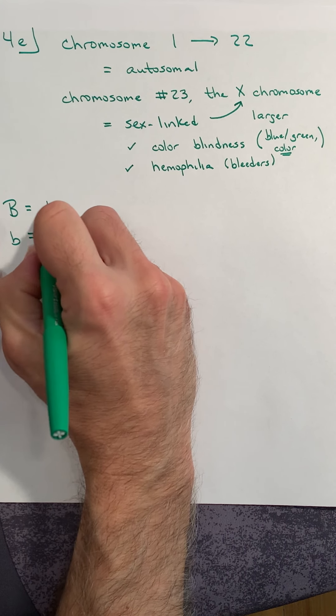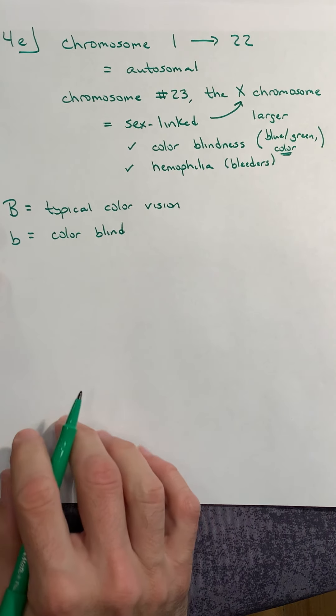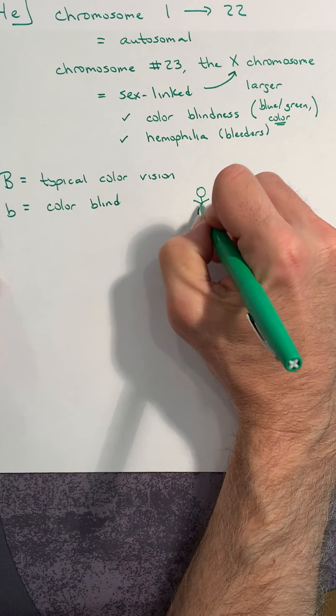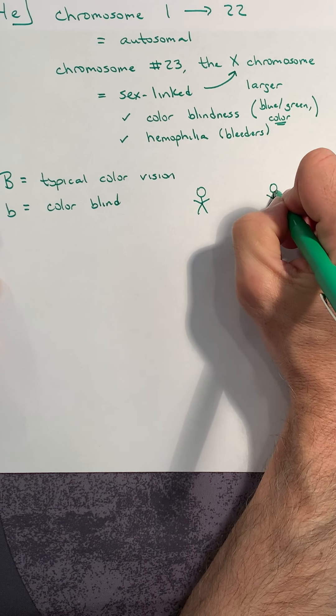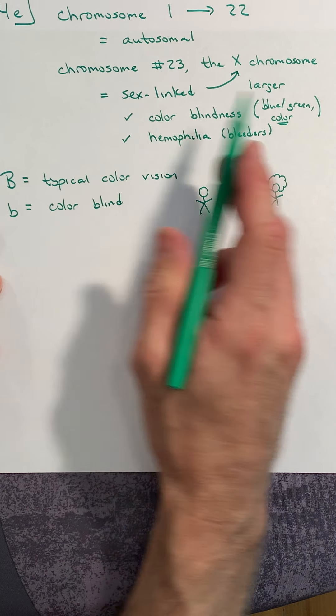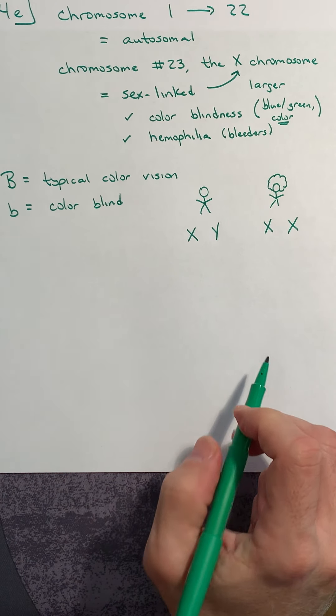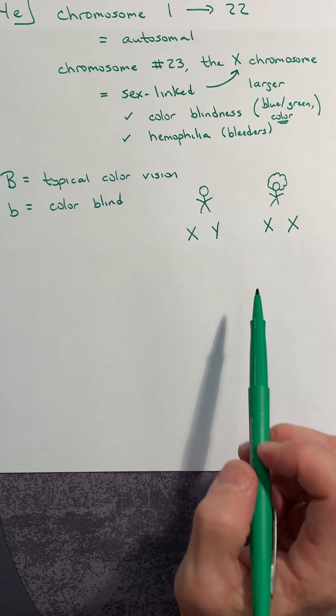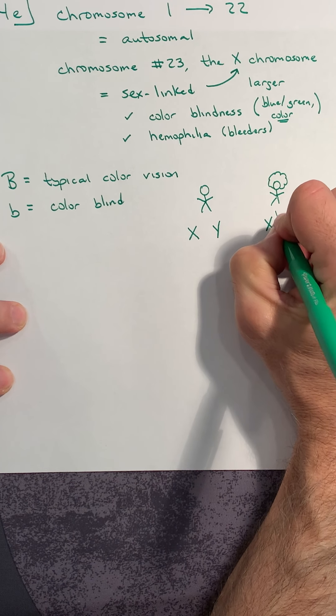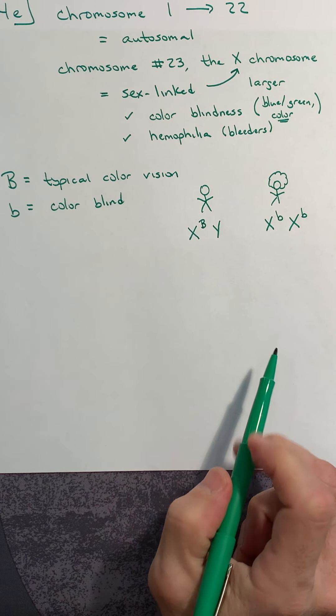Lowercase b, the recessive b, means the individual is colorblind, whereas the dominant allele is typical color vision. Now we need to establish our parents. Here's the male, here's the female. Since this is colorblindness, which is sex-linked, we need to draw the sex chromosomes here. XX for the female and XY for the male.